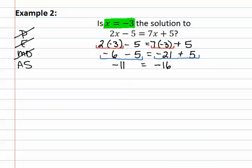We now got an answer of negative eleven equals negative sixteen. This is not a true statement, because negative eleven is not the same number as negative sixteen, so we would then put a slash through the equals to show that it does not equal, and then we would follow this with no, x equals negative three is not a solution.